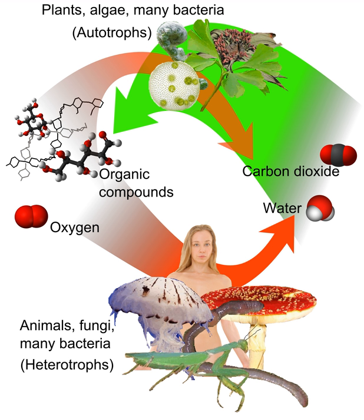All animals, almost all fungi, as well as most bacteria and protozoa, depend on autotrophs, or primary producers, for the energy and raw materials they need. Heterotrophs obtain energy by breaking down organic molecules — carbohydrates, fats, and proteins — obtained in food. Carnivorous organisms rely on autotrophs indirectly, as the nutrients obtained from their heterotroph prey come from autotrophs they have consumed.